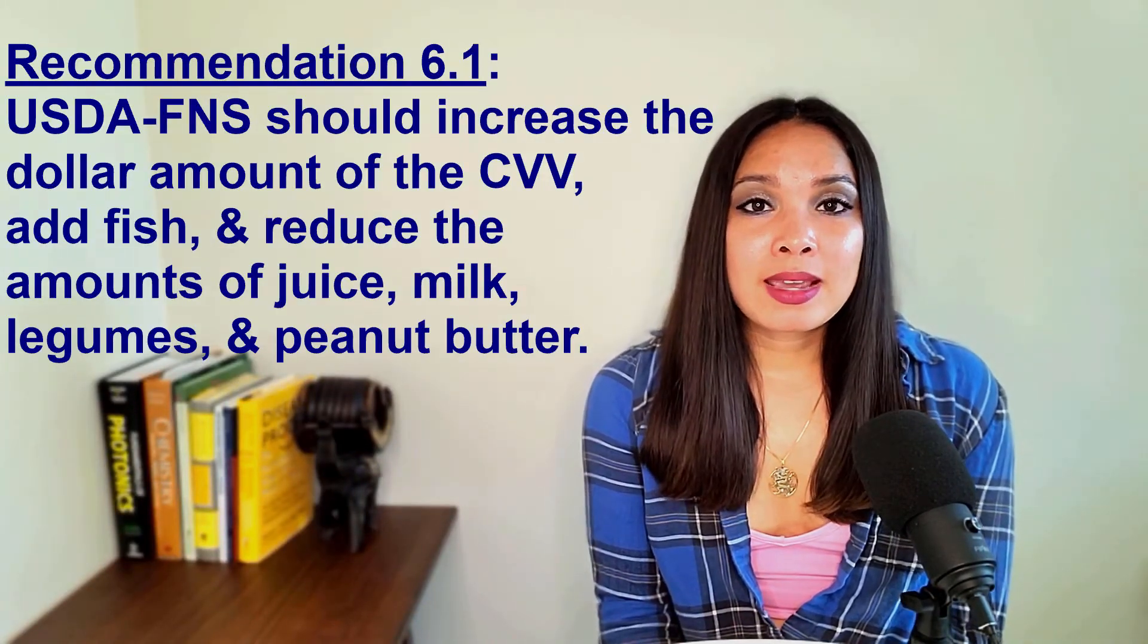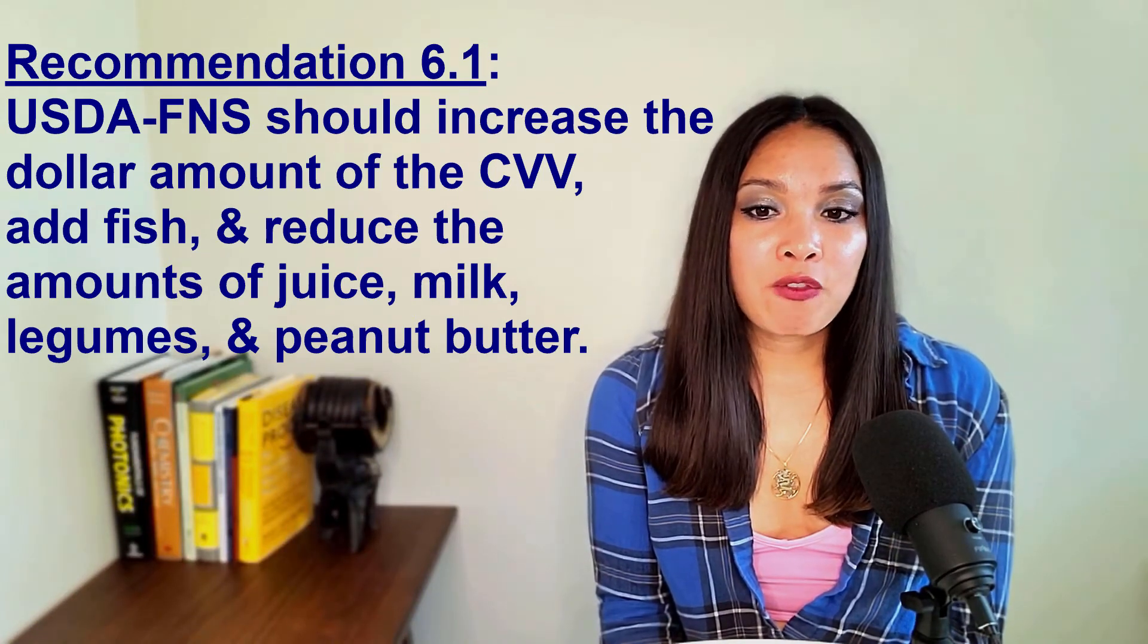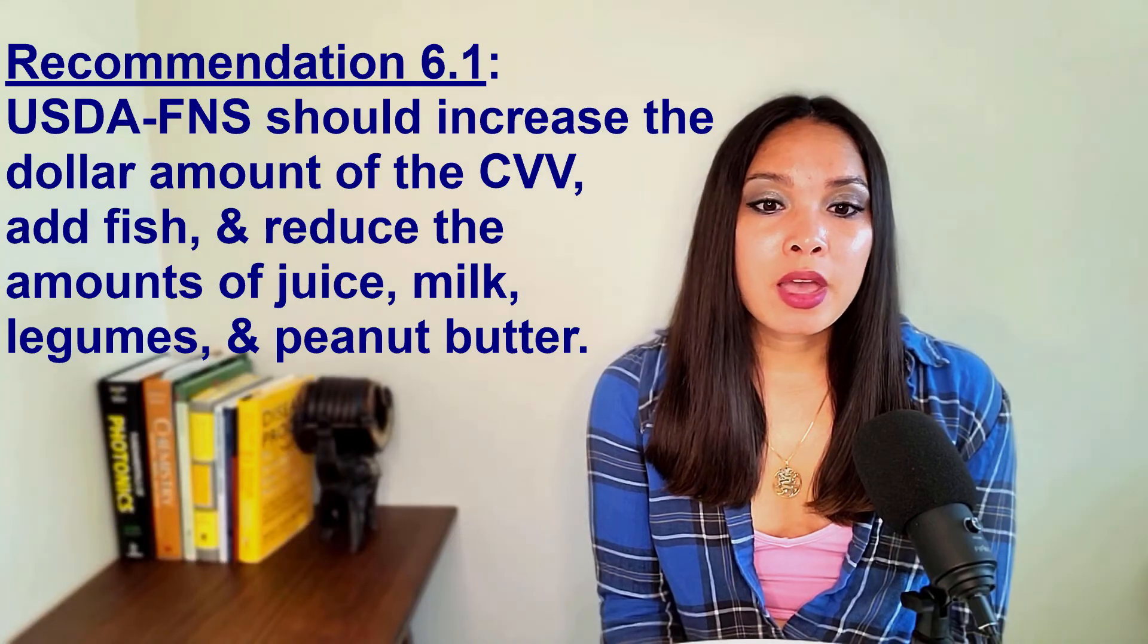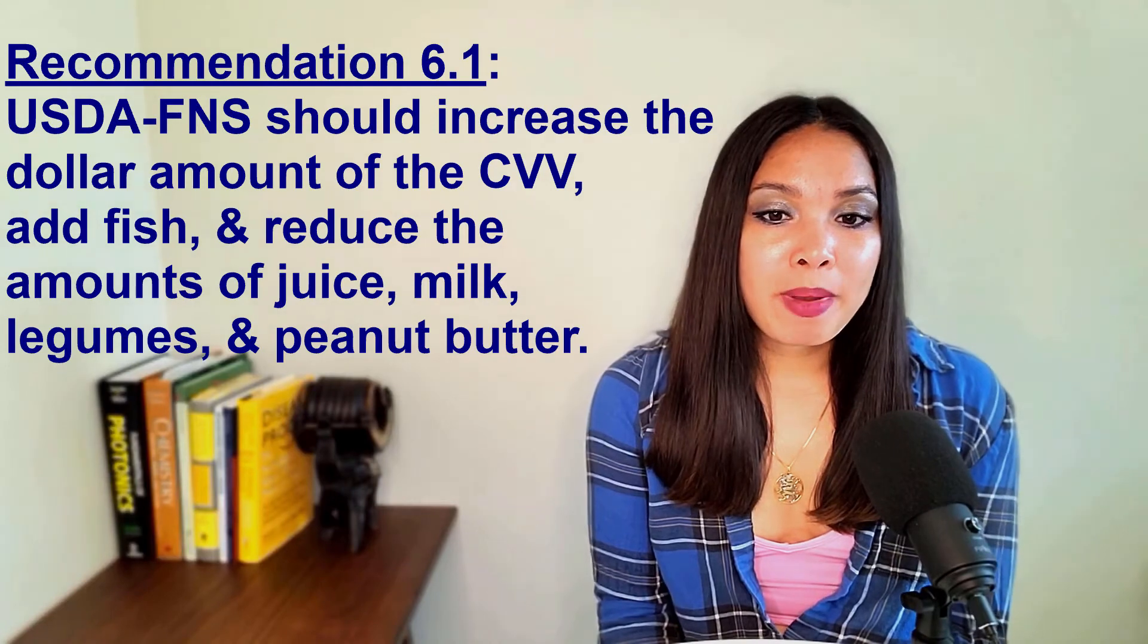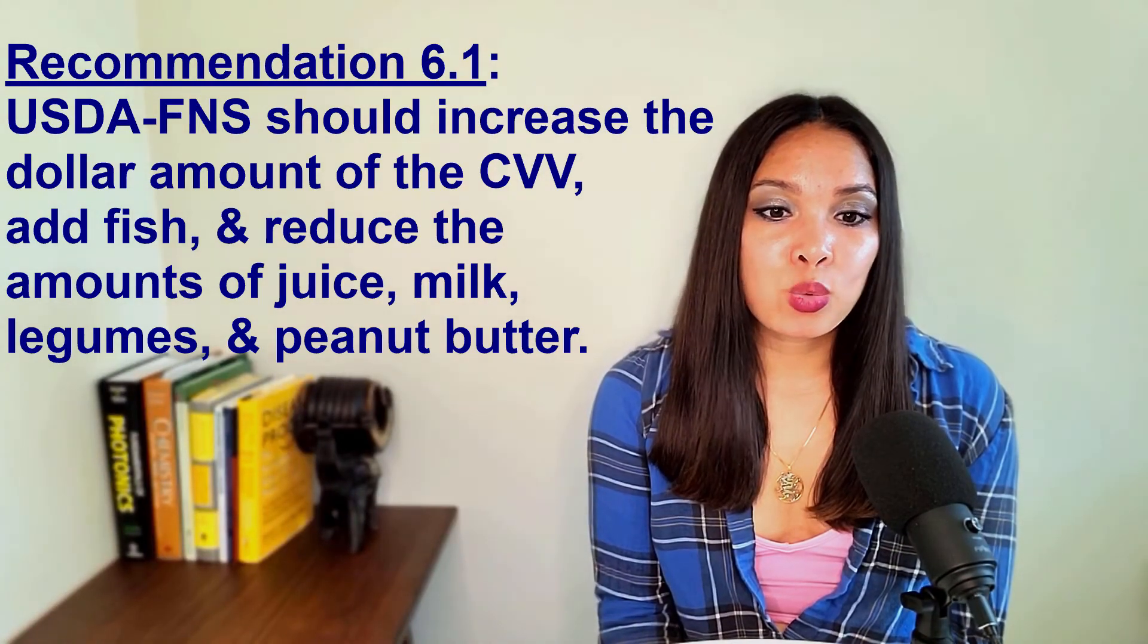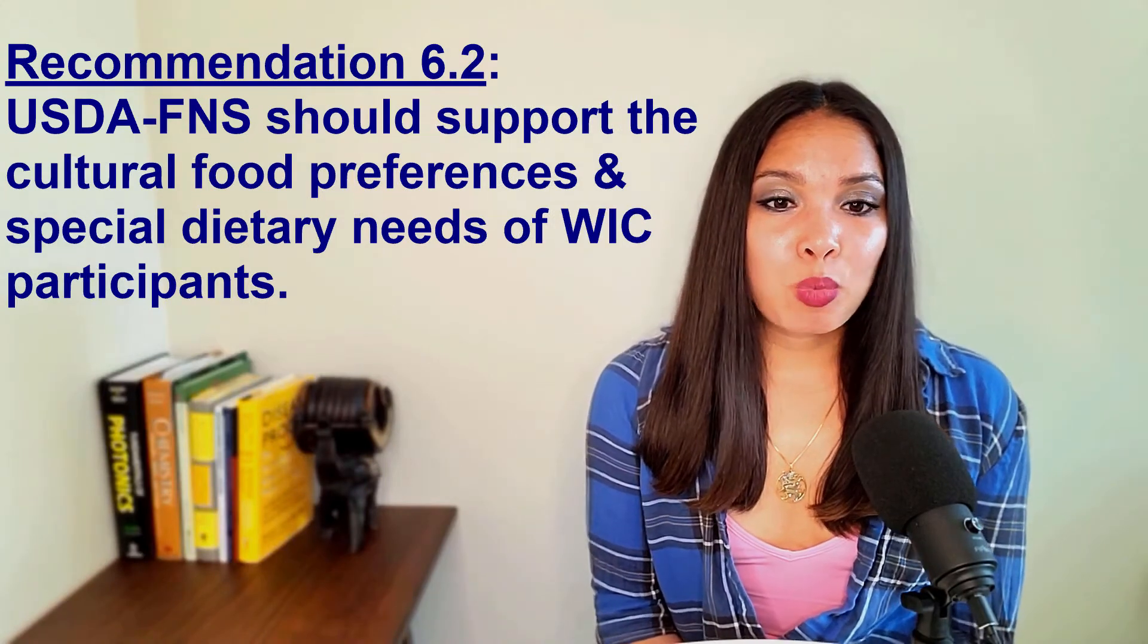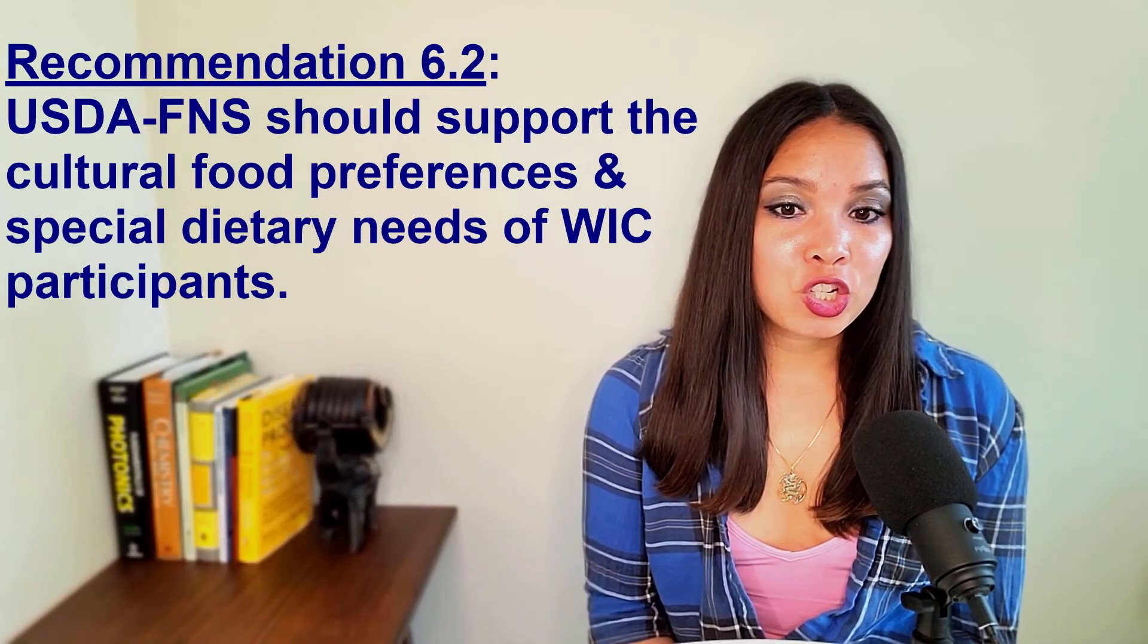So what specific recommendations were made in NASEM's 2017 report that the WIC community can look forward to? I'm going to provide a high-level summary but if you have any questions, please feel free to leave a comment in the comment box below. I'm also going to include a link to chapter six of the report which you can read if you want to learn more about the specific recommendations. Recommendation 6.1 states that USDA's FNS should increase the dollar amount of the cash value voucher, add fish, and reduce the amounts of juice, milk, legumes, and peanut butter in all food packages for women and children to improve the balance of food groups in alignment with the 2015 through 2020 dietary guidelines for Americans.